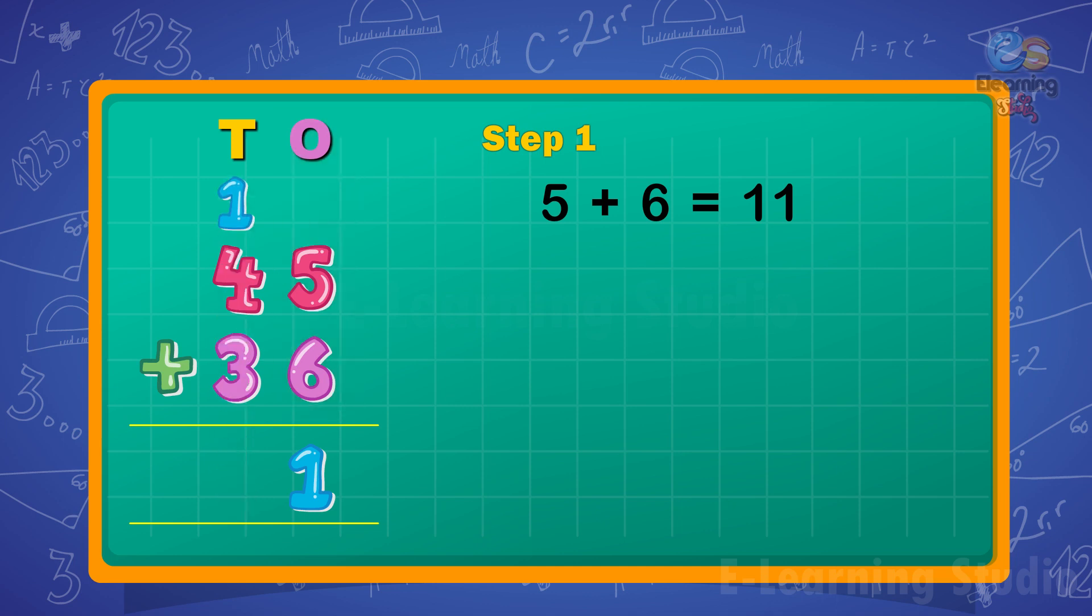And carry 1 ten to the tens column. Step 2: Next add the tens. 4 plus 3 plus 1 is equal to 8 tens. Write 8 under the tens column.